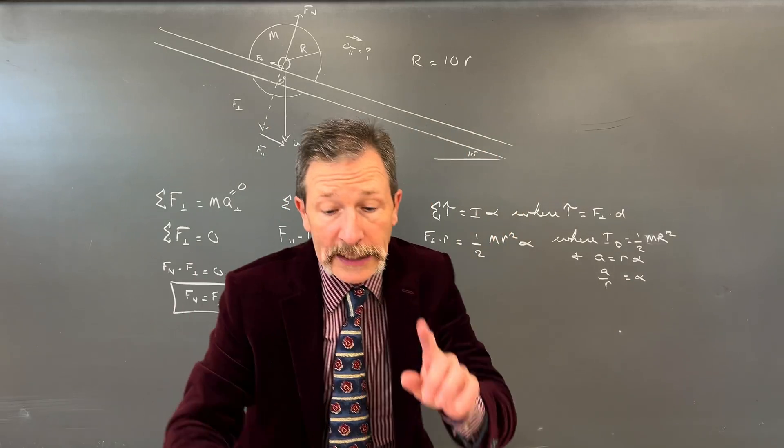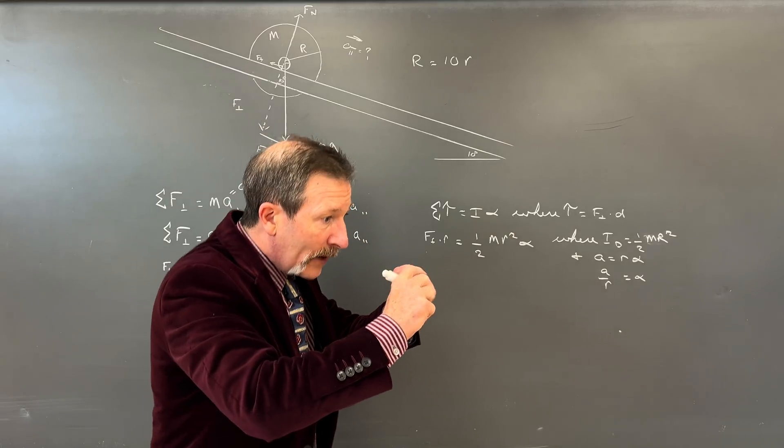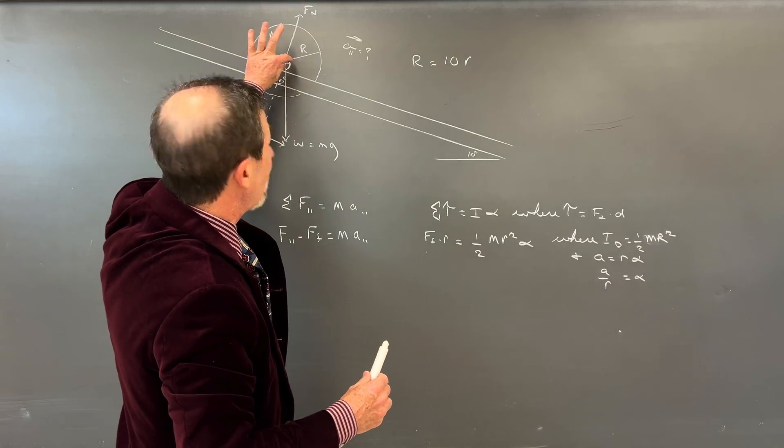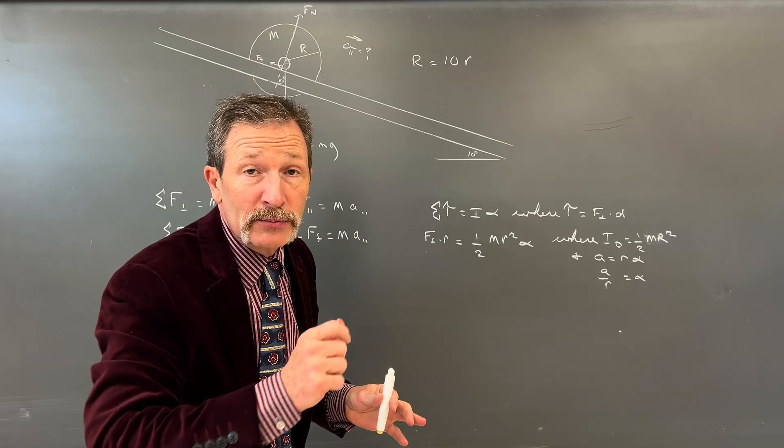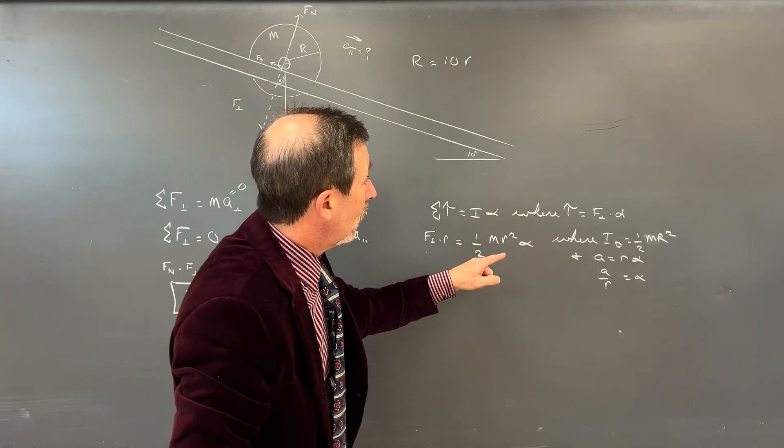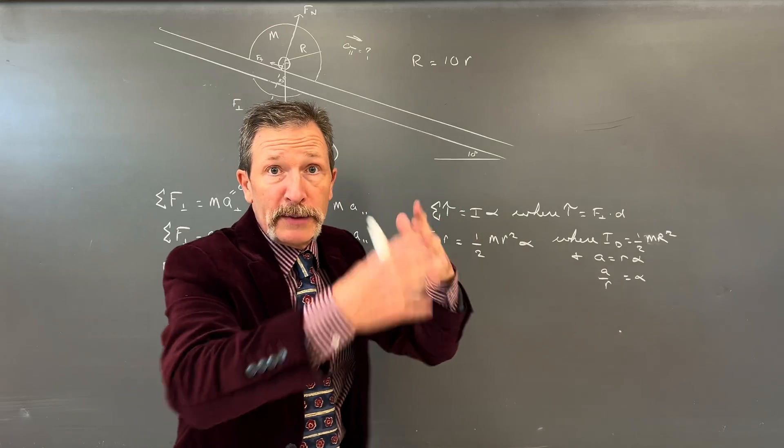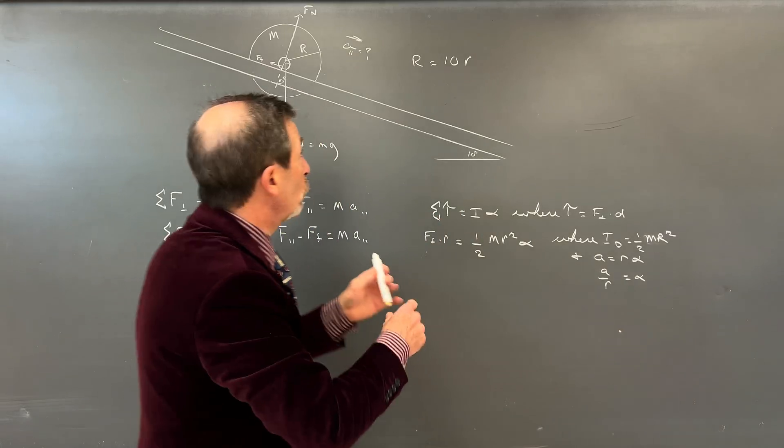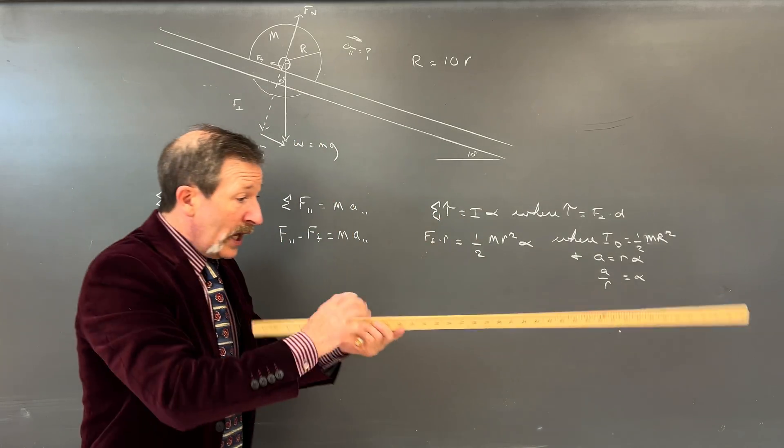That's going to come into play when we have our inertia, because most of our inertia is going to come from the big disk, not that small little rod. So let's just call this a disk, so 1 half mass, and then we have our radius squared.